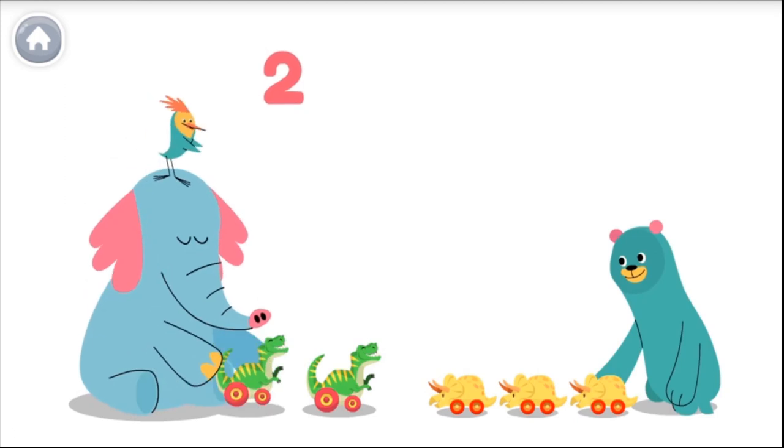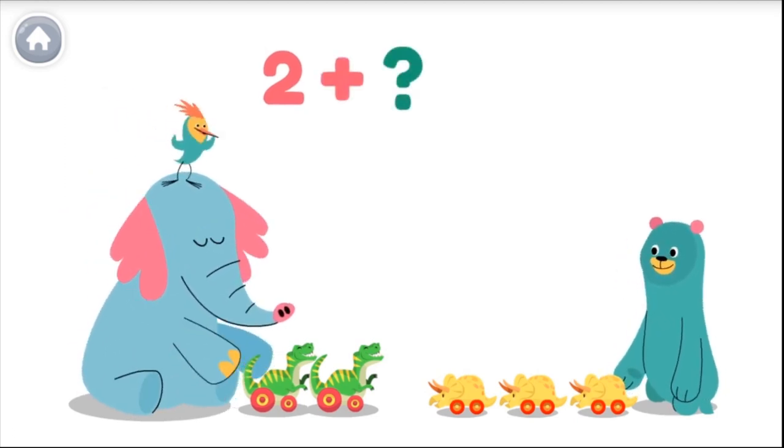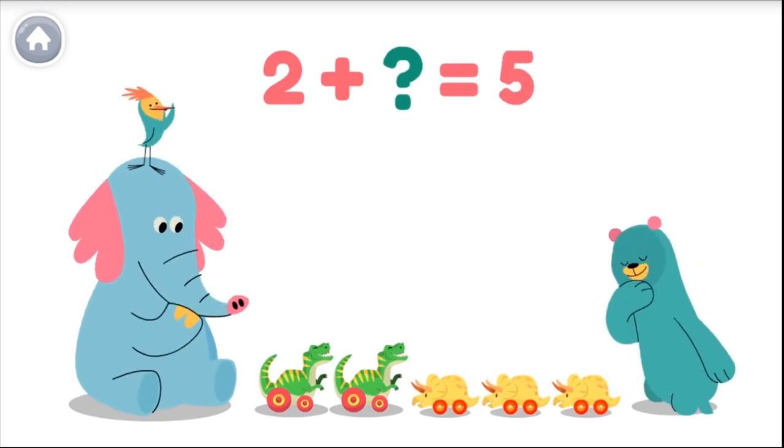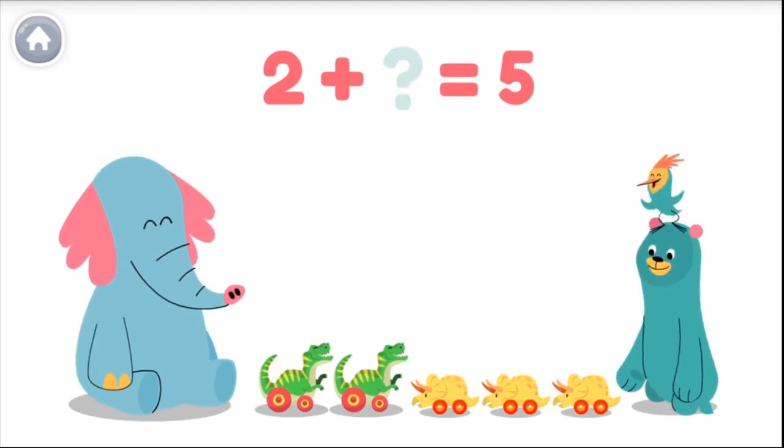Allo has two dinosaurs. He puts his toys with Cody's toys, and together they have five toy dinosaurs. So how many dinosaurs does Cody have? If we add two and three, we get five. So Cody has three toy dinosaurs.